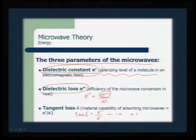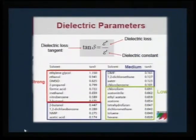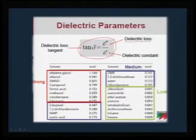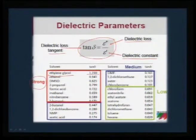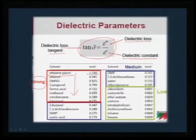In the case of polar compounds, conductivity is greater compared to omega, so tan delta will be very close to 1. The dielectric parameters are governed by this equation: tan delta = E″ / E′, where E″ is the dielectric loss and E′ is the dielectric constant. Mapping several compounds: strongly coupled molecules are led by ethylene glycol with a tan delta of 1.350. Most polar compounds are very close to unity and are therefore the best microwave absorbers.